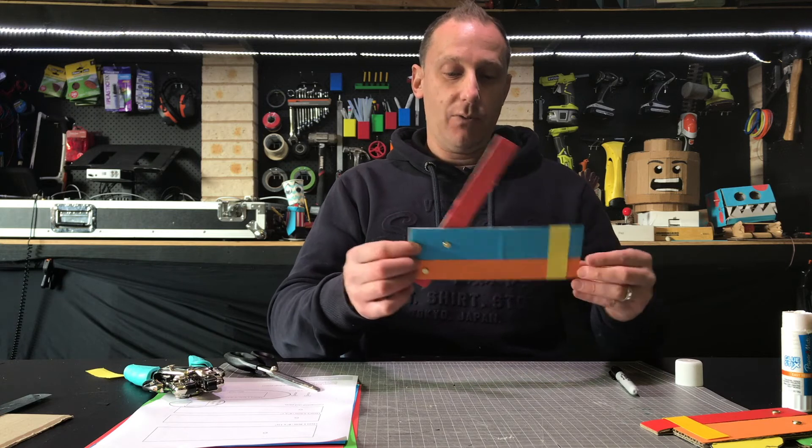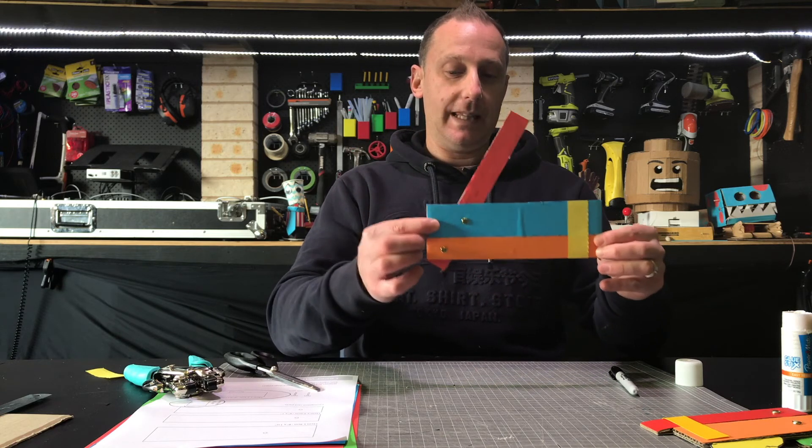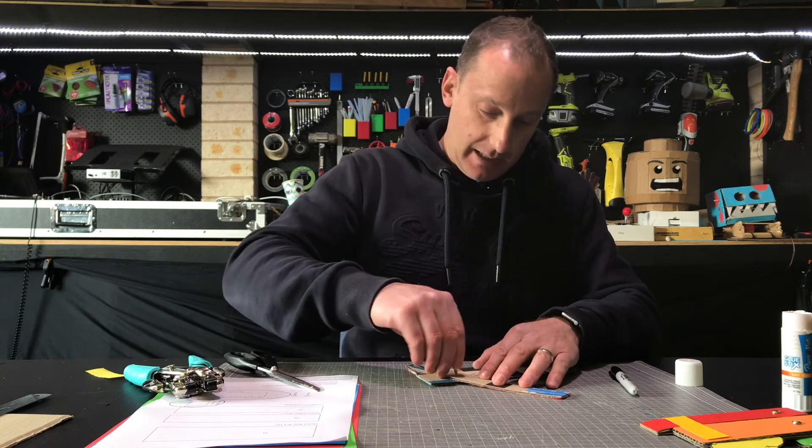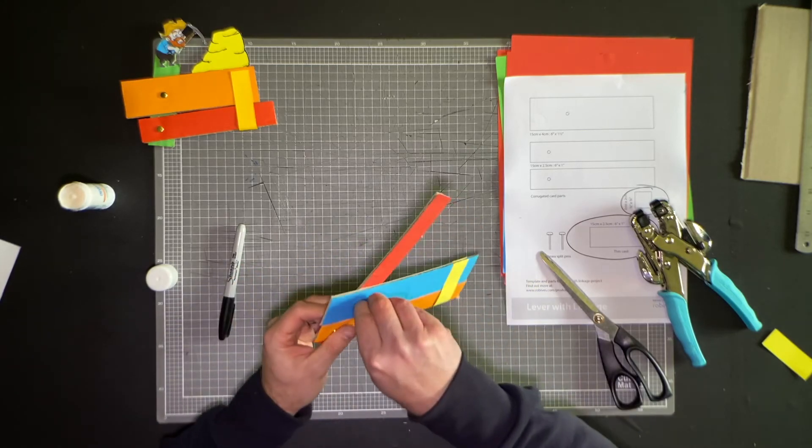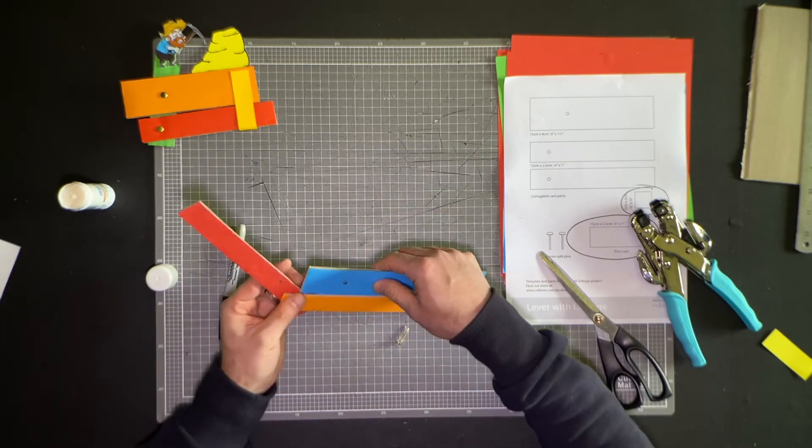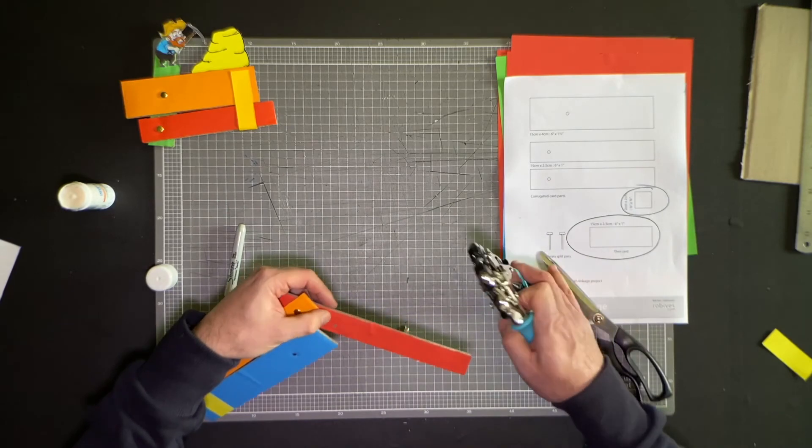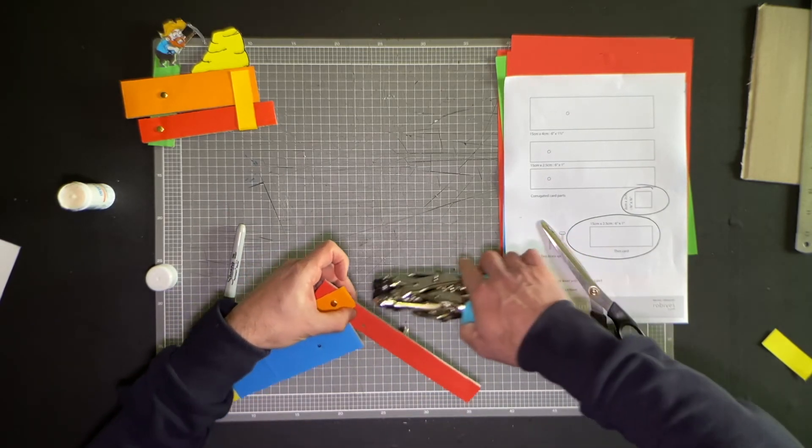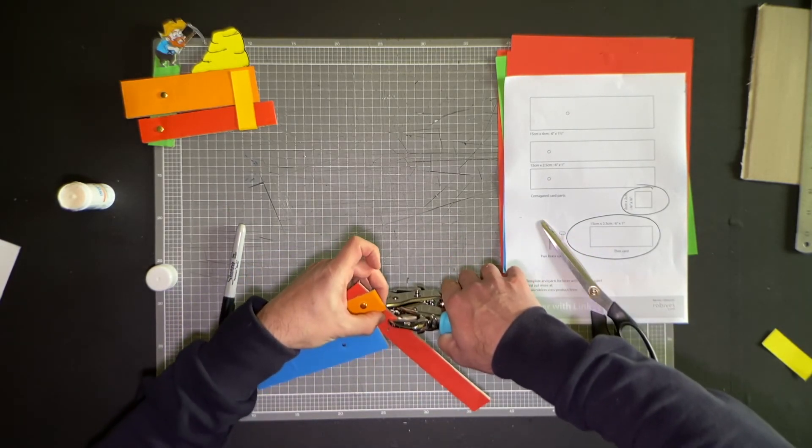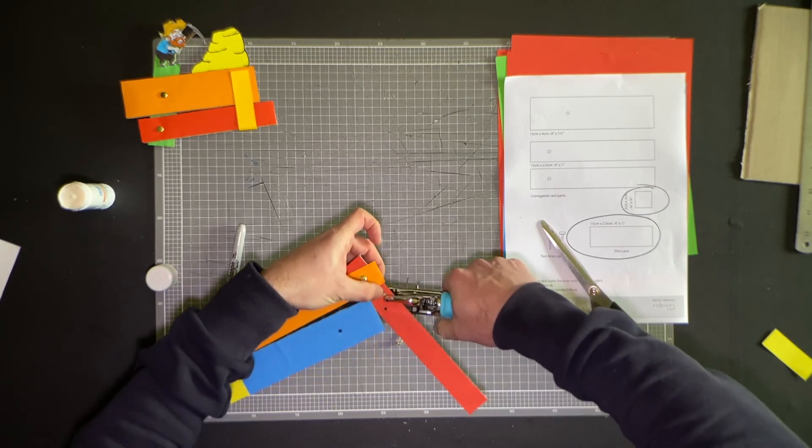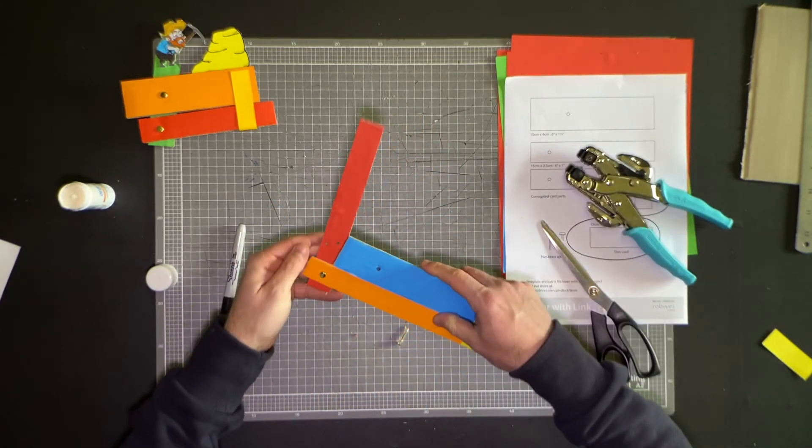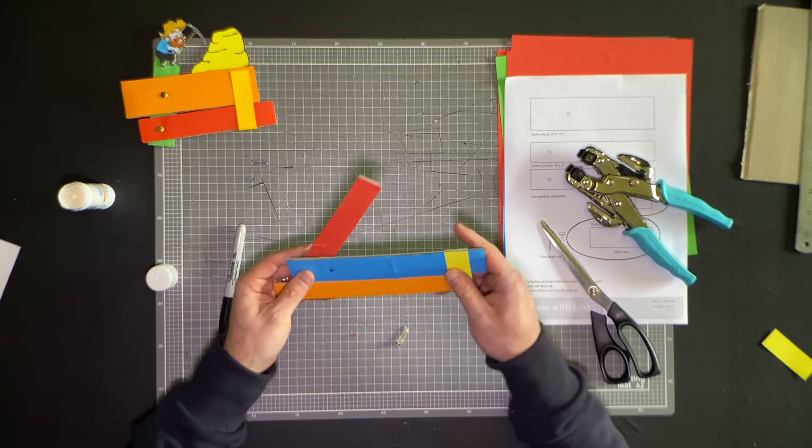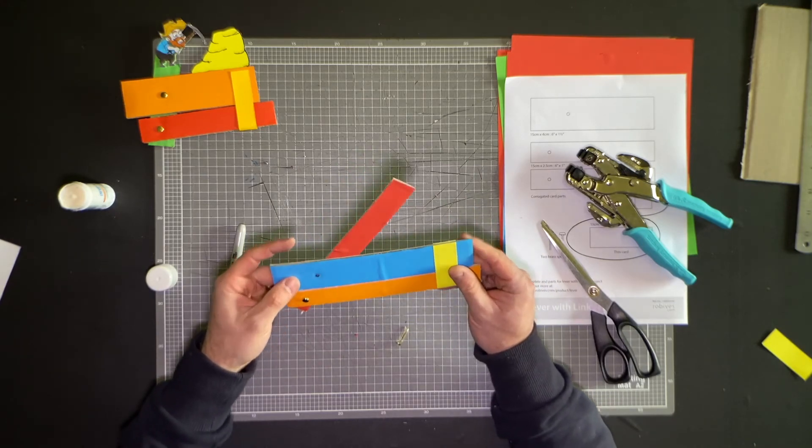What you can do, if you want to open more range of movement in that lever, you can come back into here. Just take that split pin out and add another hole there. And then that way, you can choose where your lever opens and closes from.